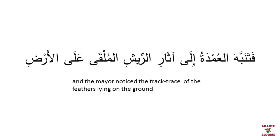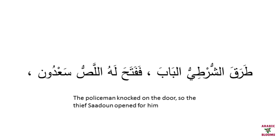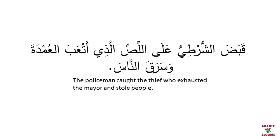فذهب مسرعا إلى بيت العمدة — so he went quickly to the mayor's house. جاء العمدة ومعه الشرطة إلى بيت العم ممدوح. فتنبه العمدة إلى آثار الريش الملقى على الأرض — the mayor noticed the trace of the feathers on the floor — وتتبعوا هذا الأثر إلى أن وصلوا إلى بيت اللص سعدون — and they followed this trace till they reached the house of the thief, Saadoun. طرق الشرطي الباب — the policeman knocked on the door — ففتح له اللص سعدون — so the thief Saadoun opened the door — وإذا بالدجاج يملأ البيت — and the chickens were everywhere in the house.